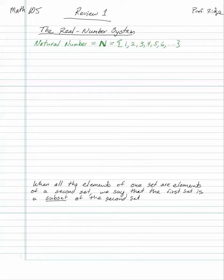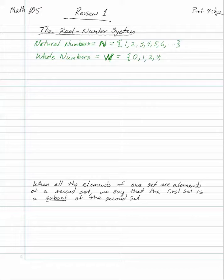The next set is the whole numbers. We use a capital W for whole numbers. The only difference between natural numbers and whole numbers is we put in 0. So 0, 1, 2, 3, 4, 5, and so on.